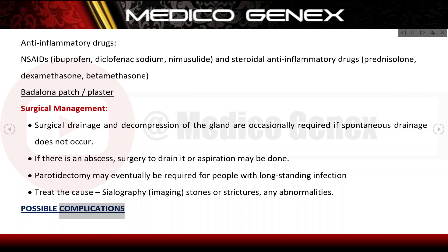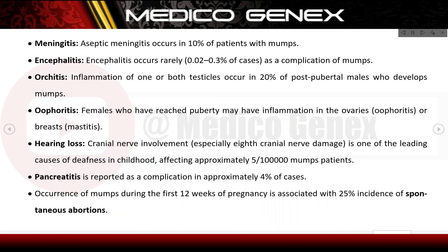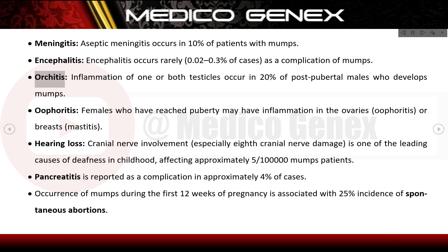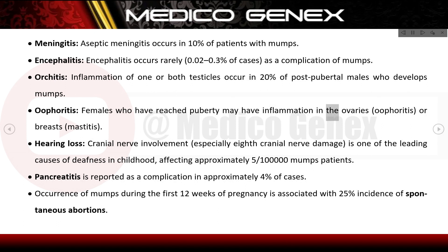Possible complications include meningitis, which occurs in 10% of patients with mumps, and encephalitis, which occurs rarely (0.0–0.3% of cases) as a complication of mumps. Orchitis — inflammation of one or both testicles — occurs in 20% of post-pubertal males who develop mumps. Females who have reached puberty may experience oophoritis (inflammation of the ovaries) or mastitis (inflammation of the breasts).